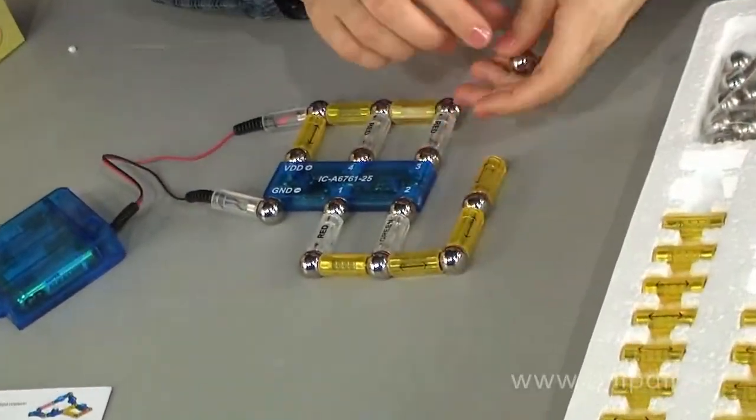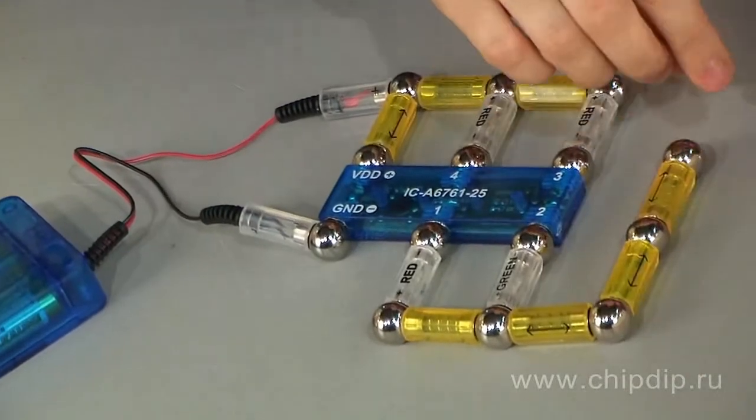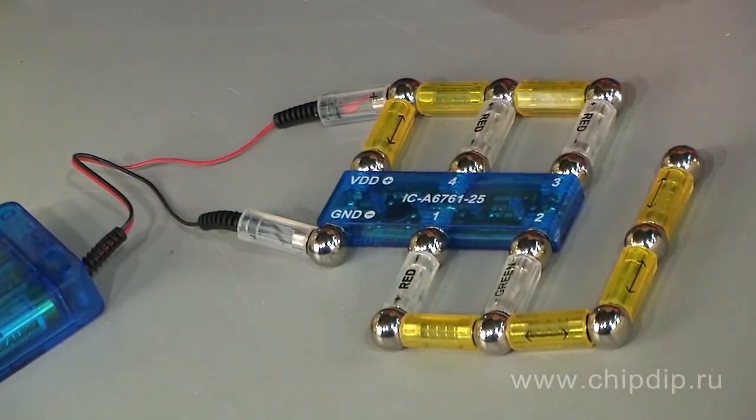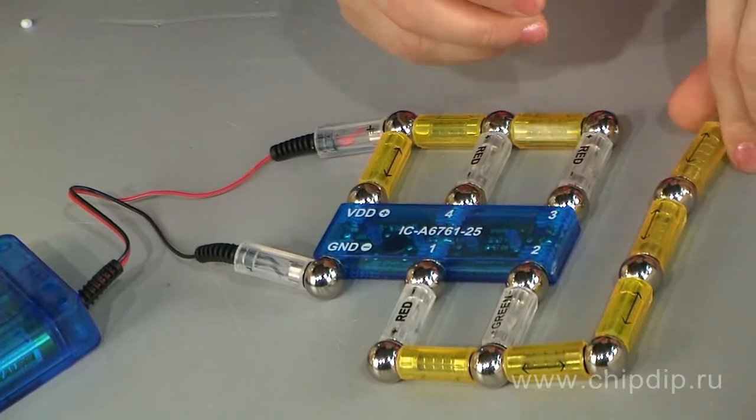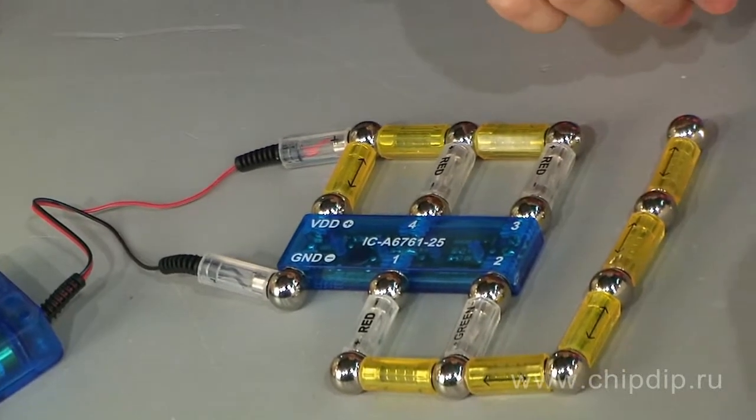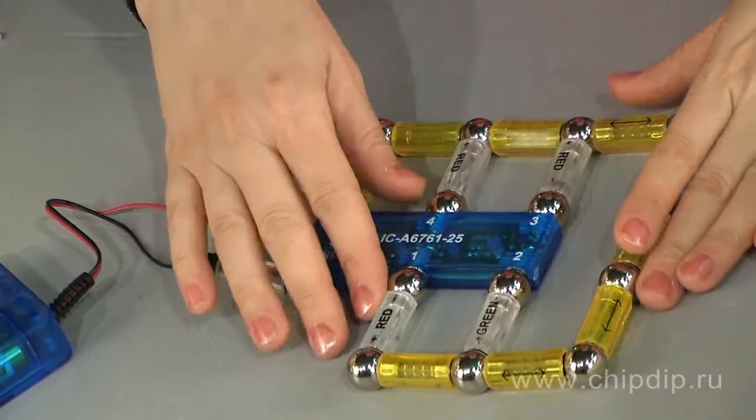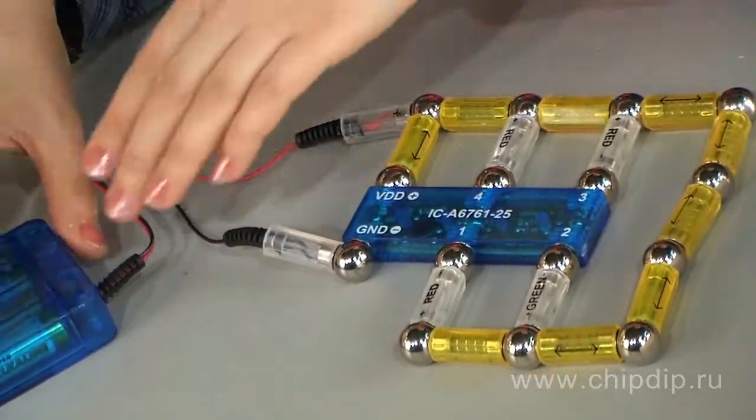With the help of this applied manual, your child will be able to assemble 50 various electric circuits using special diagrams. For example, a burglar alarm, a sound-sensitive lamp, a light detector, and many other things.